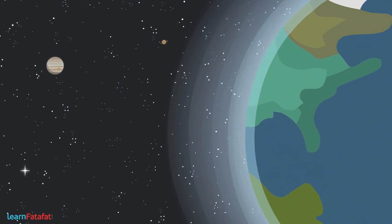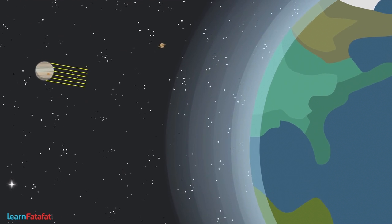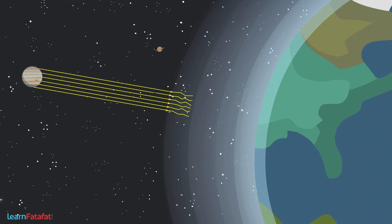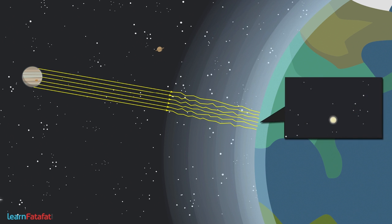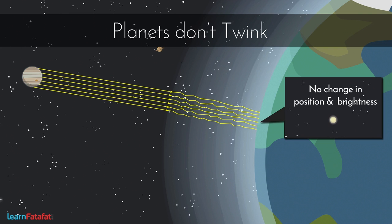Large numbers of rays coming from such objects undergo refraction in a random manner. But, while reaching the observer, they nullify each other's effect. That means neither the position of planets changes, nor is there a change in brightness of light coming from them. The intensity of incoming light does not change. It remains constant. And so, planets don't twinkle.